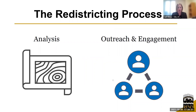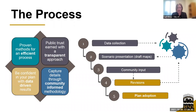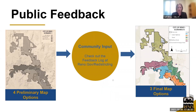The redistricting process has two key components: a very analytical side to make sure we're meeting the criteria, and an important outreach and engagement process that you are taking part in tonight. This process started with collecting data from the census and analyzing it, then using guiding principles to draft four preliminary scenarios released in early October. We asked the community for input, and that has now transitioned us into three final maps heading into formal plan adoption. The public feedback log from that process is available at reno.gov.